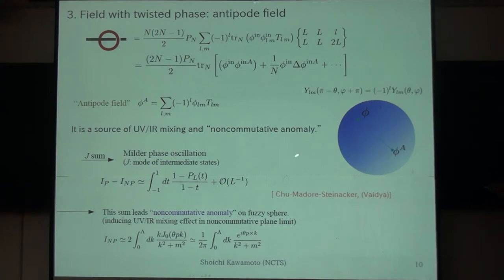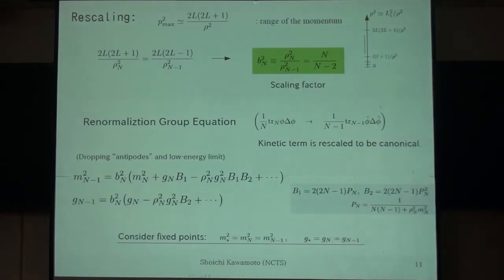And then, we can actually write down the renormalization group equation. This is the explicit form. Before then, as in the usual quantum field theory, after integrating out some modes, the momentum is shifted. So, we may put some scaling factors from the original size of the momentum. Then, you can write down the renormalization group equation like this. In this case, I first, for the moment, I simply dropped that part of the twisted field. This is actually the simplest possible equation to write down.